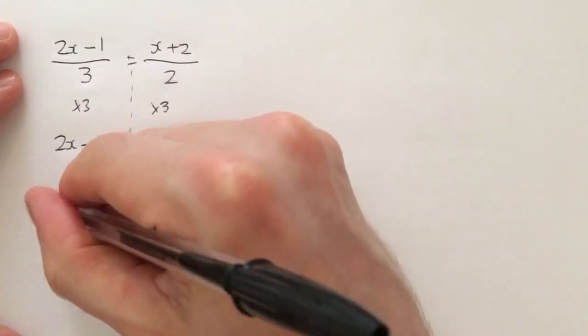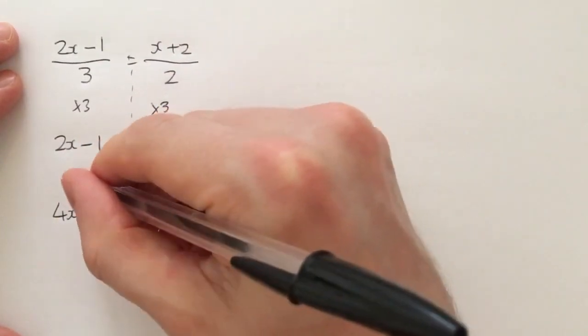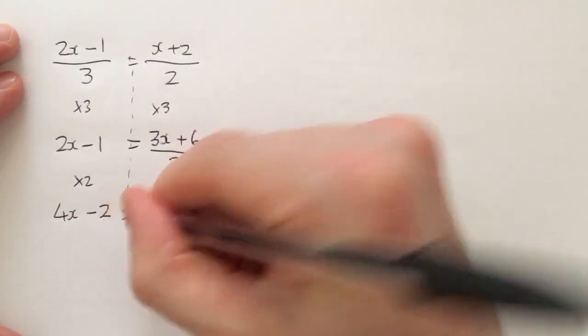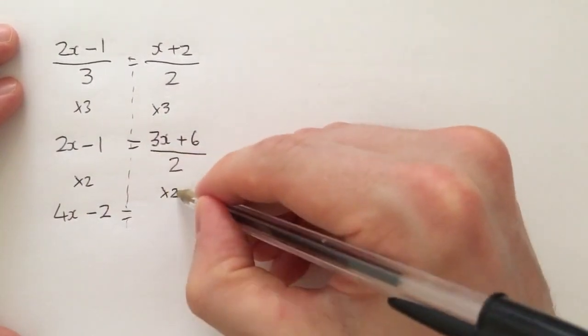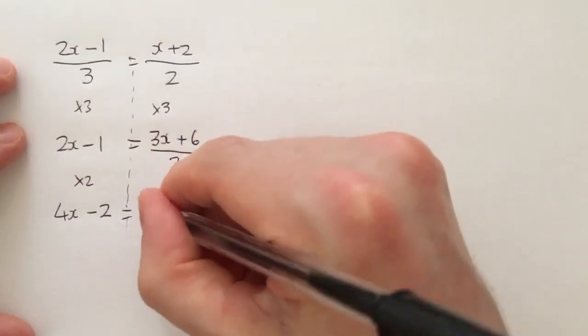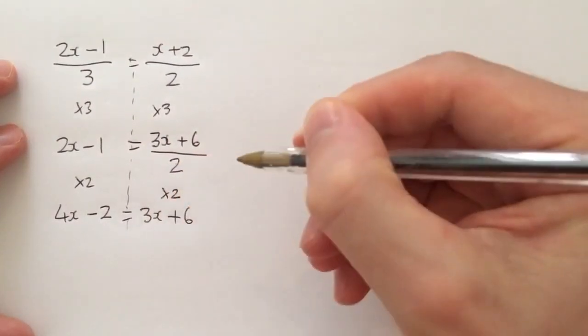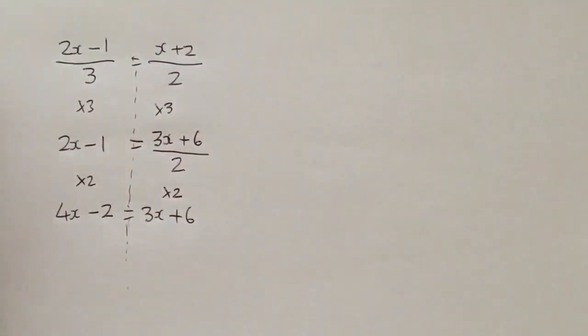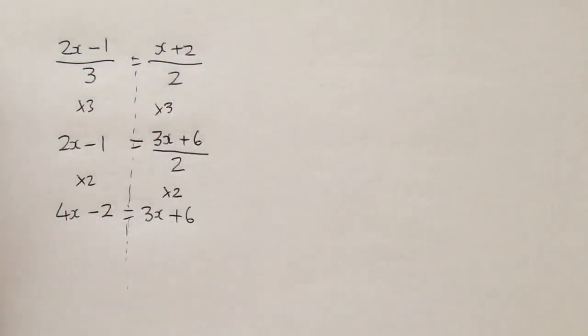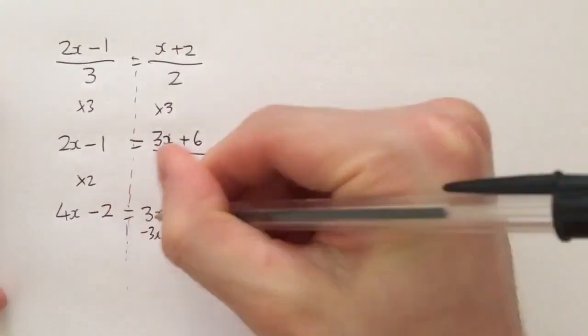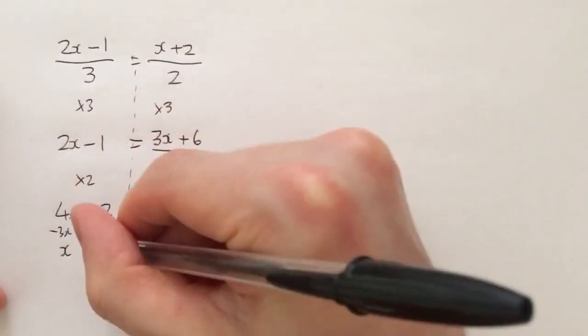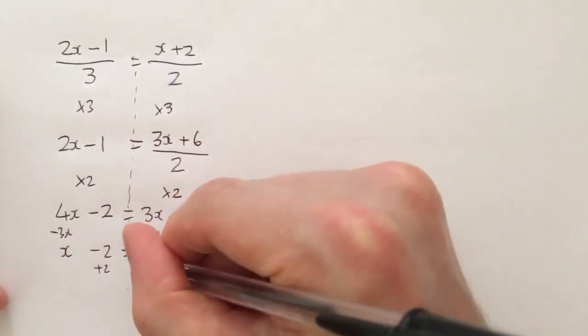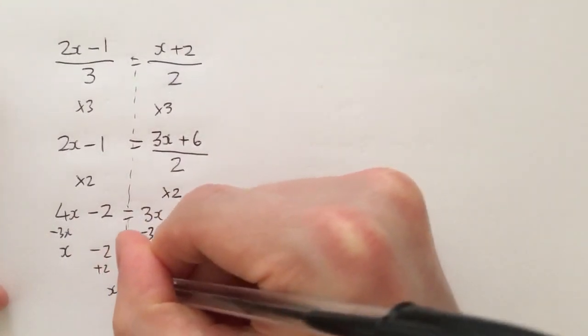2x times 2 is 4x, negative 1 times 2 is negative 2 equals, and then divide by 2 times by 2 cancels out. So I'm just left with here 3x plus 6. And now I can solve the equation just like I did in the previous video. Okay, so I just minus 3x, minus 3x on both sides because it's smaller, leaves me with x minus 2 equals 6. Then I would add 2, add 2, x will equal 8.